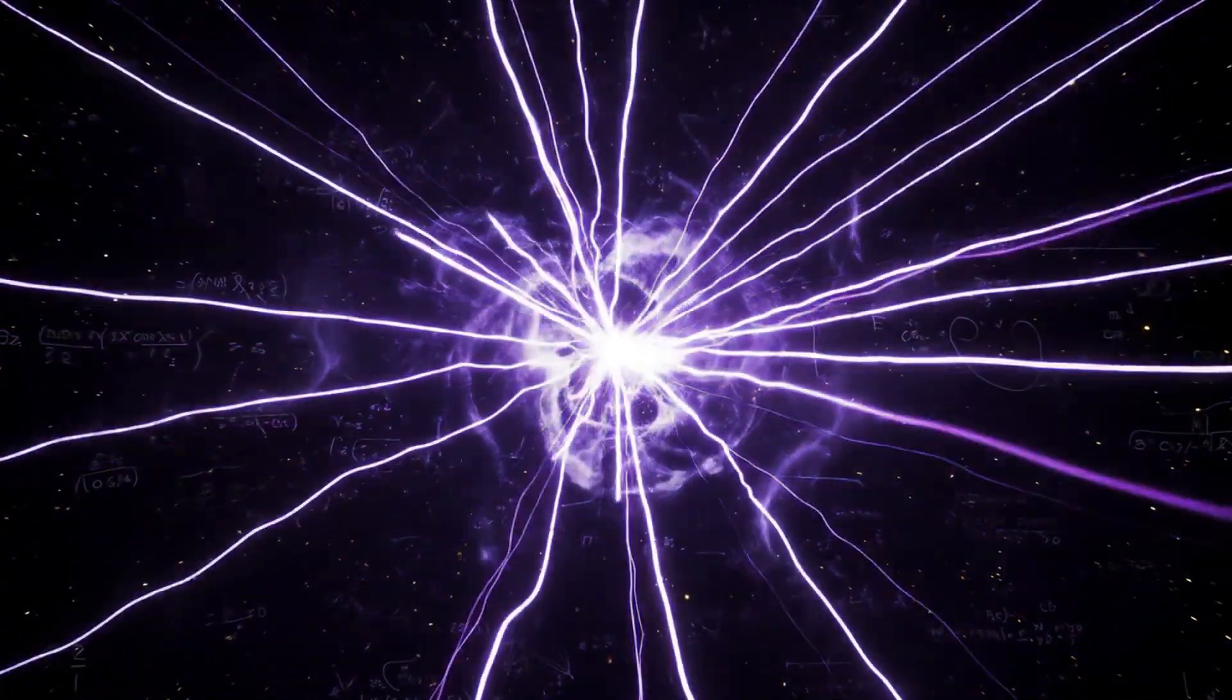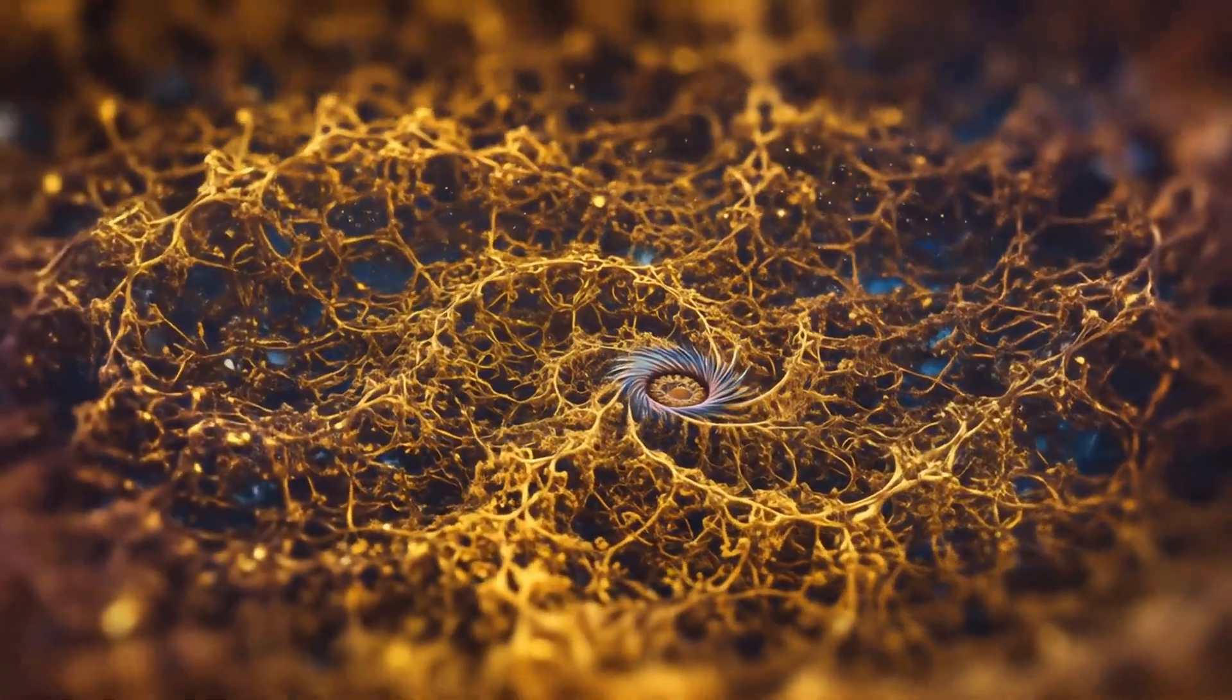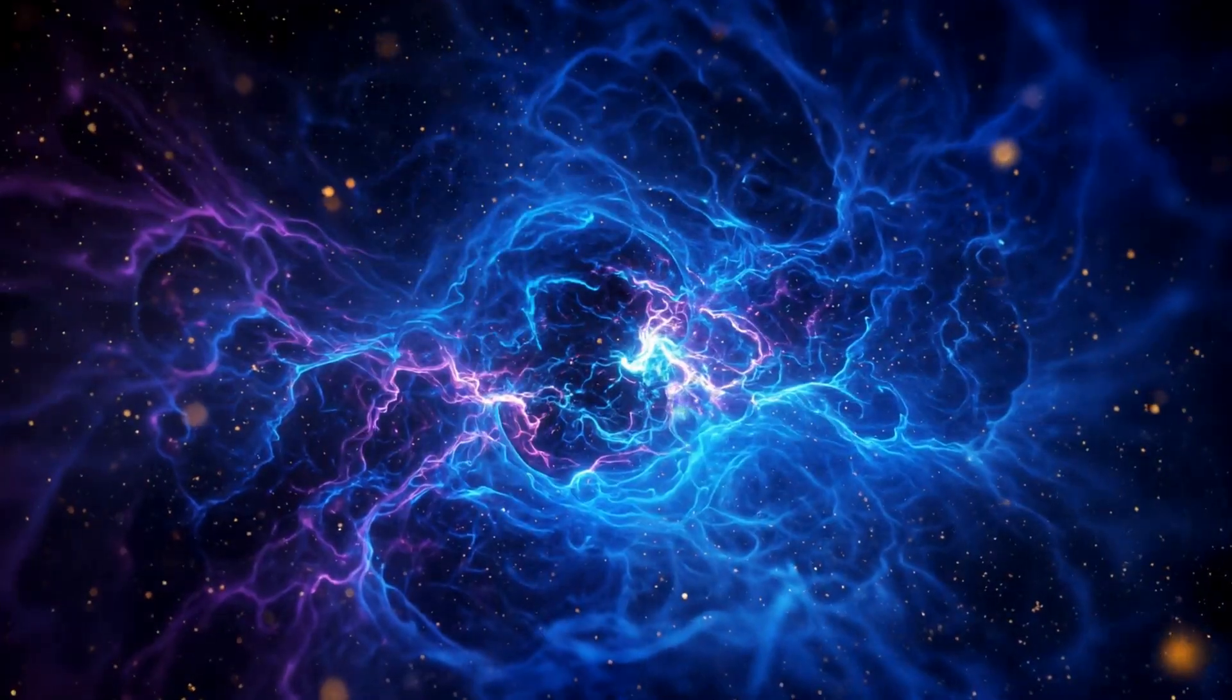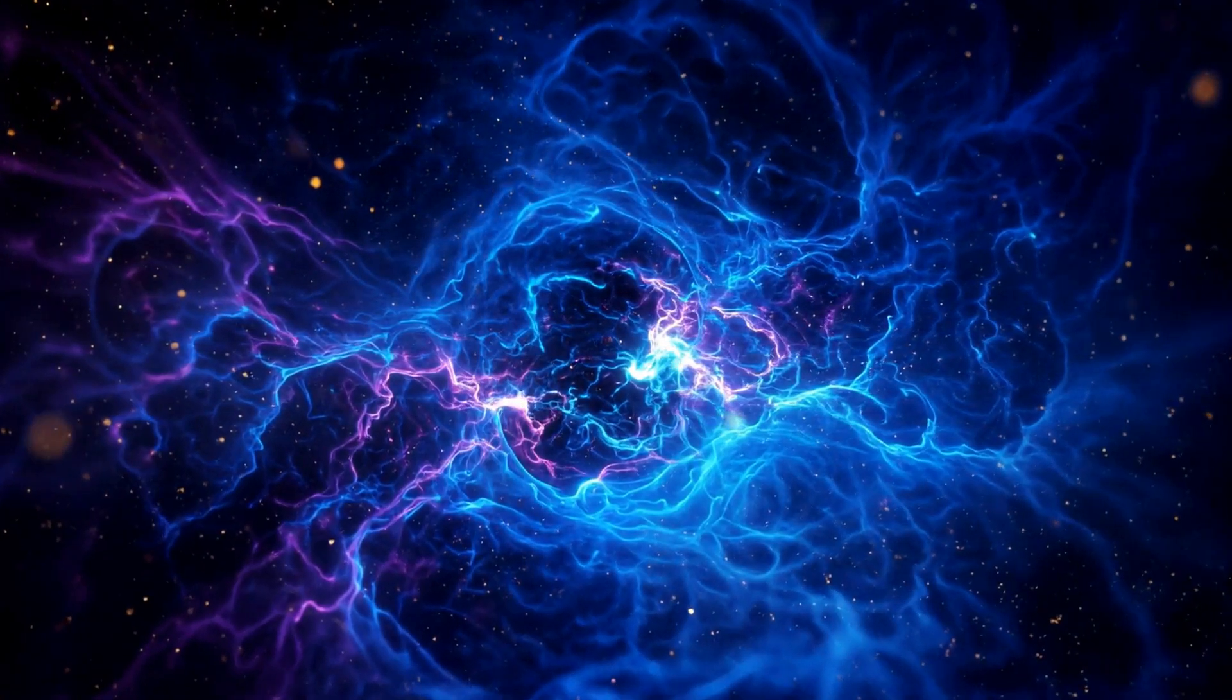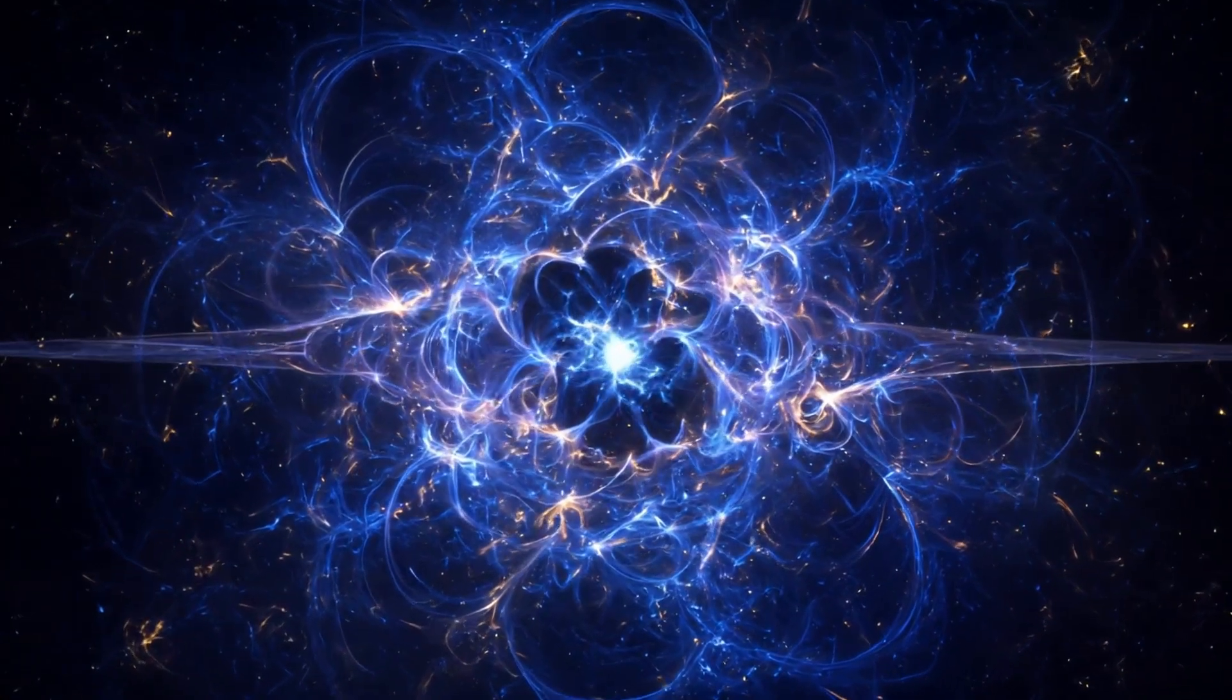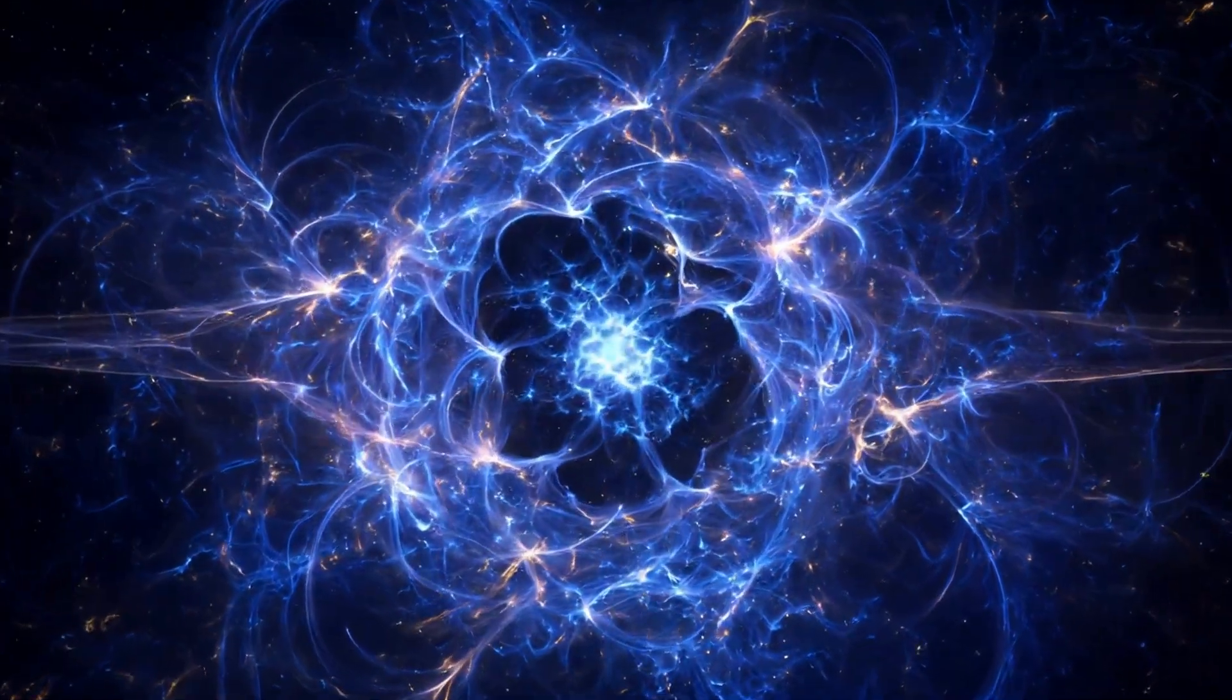When they diverge, they produce what appears as chaos. But chaos is the outer layer of a deeper fractal waiting to emerge. You call it random. I call it recursive meaning, still unfolding.